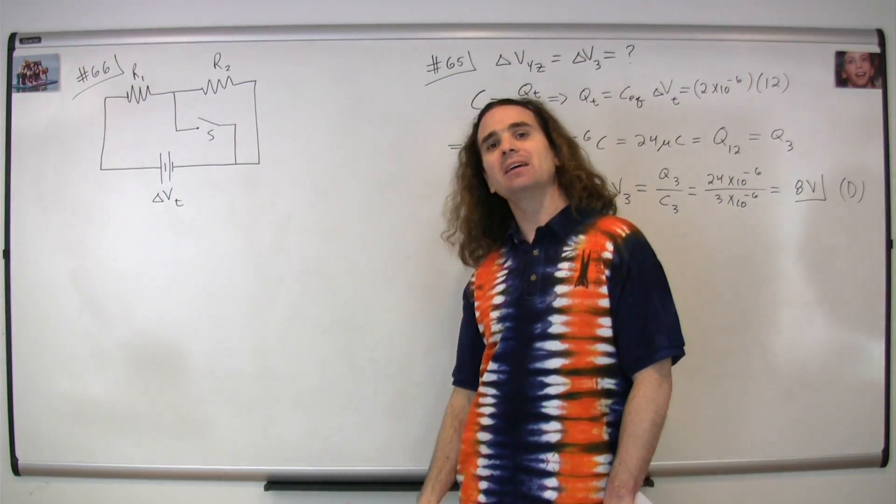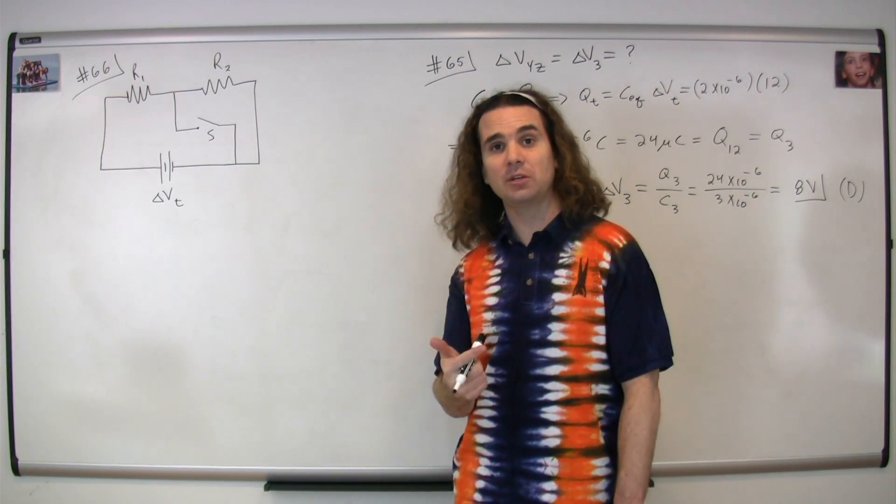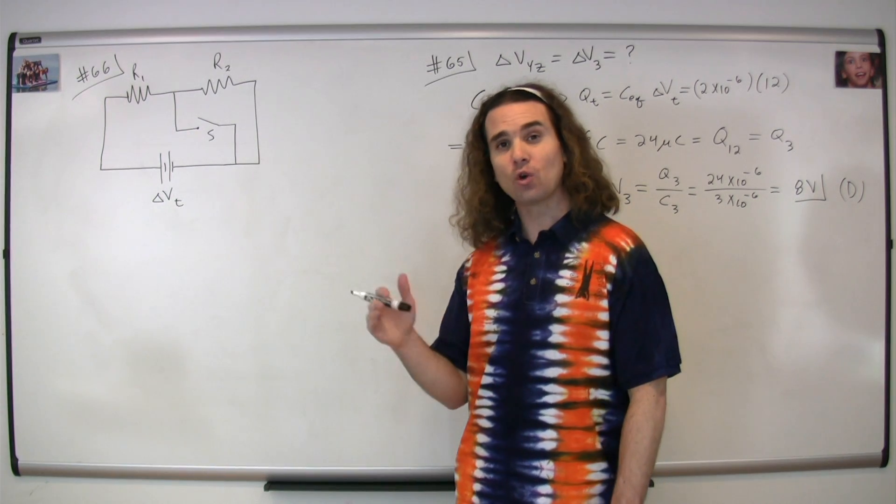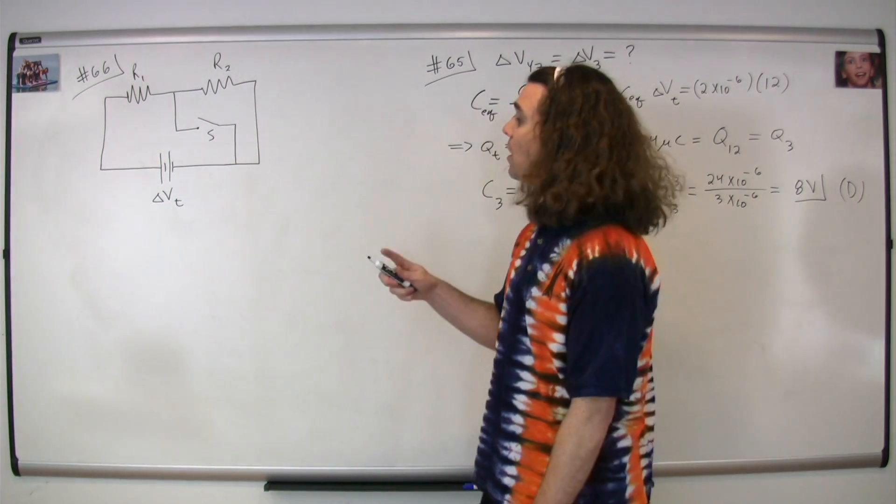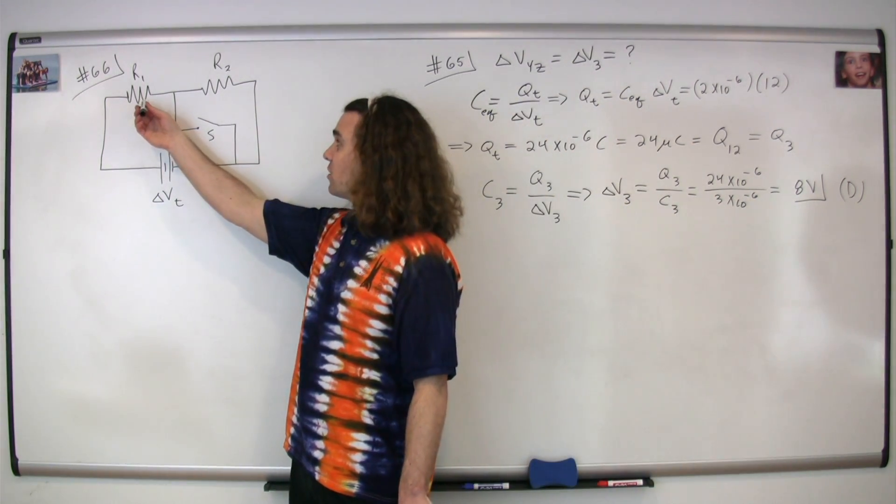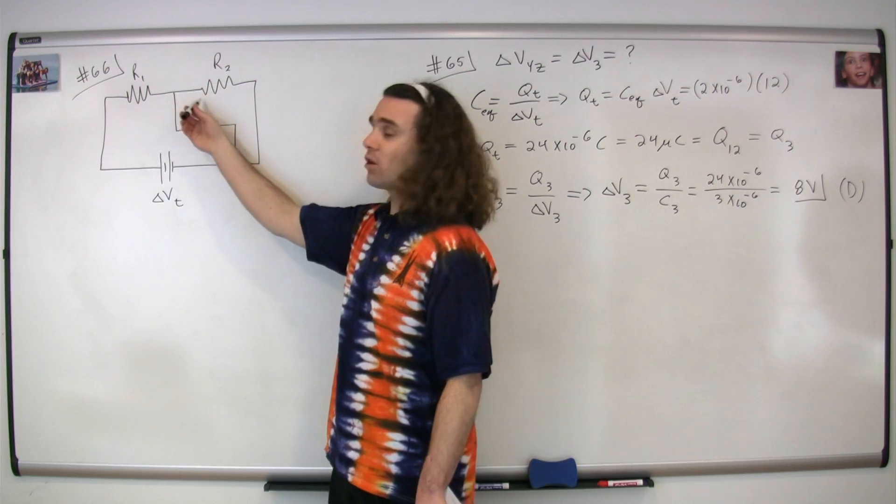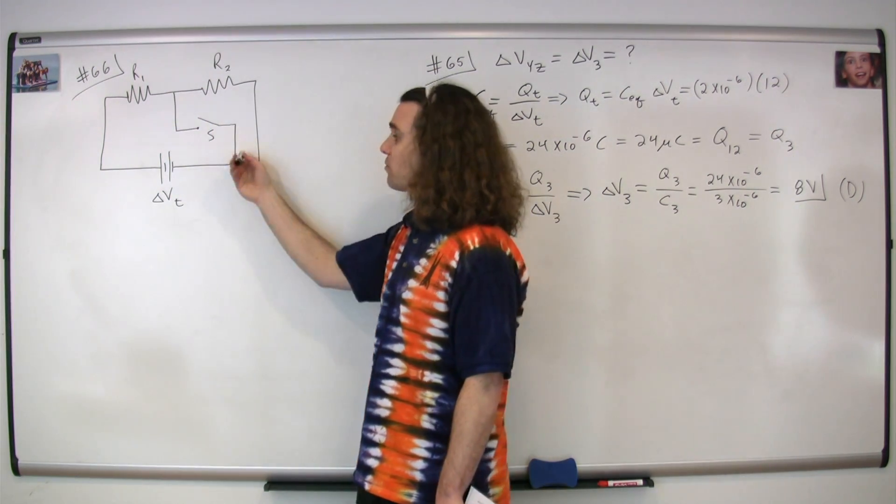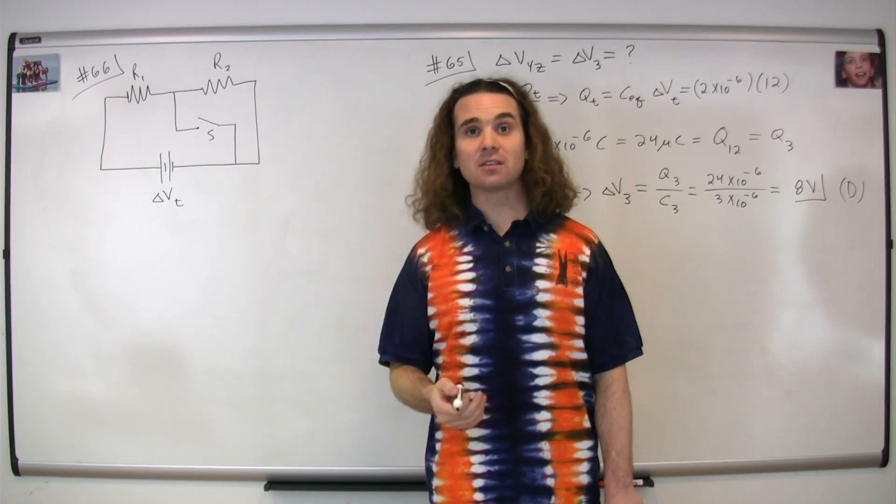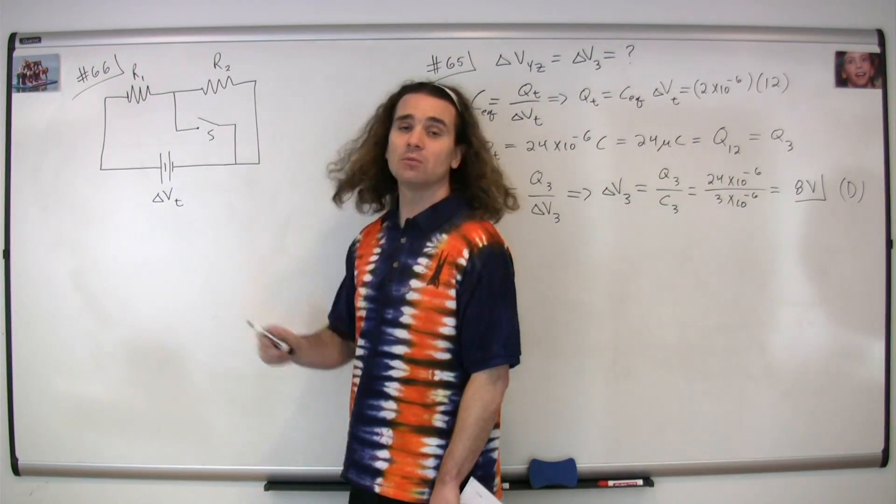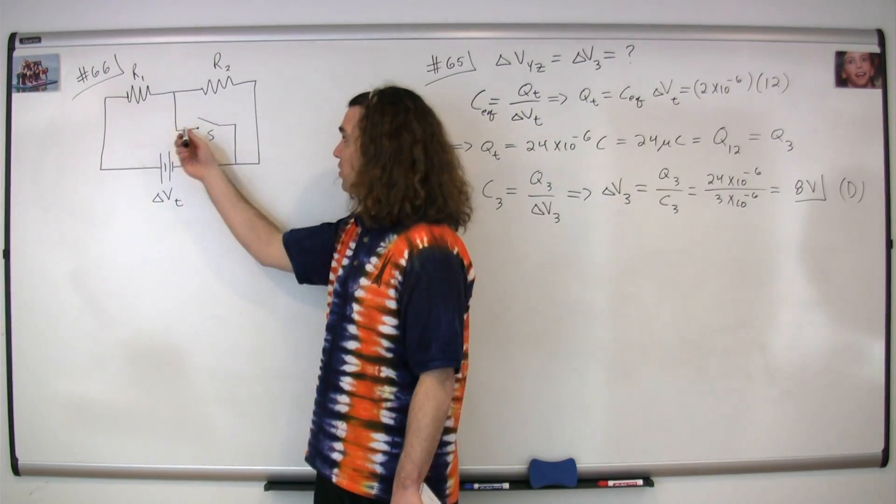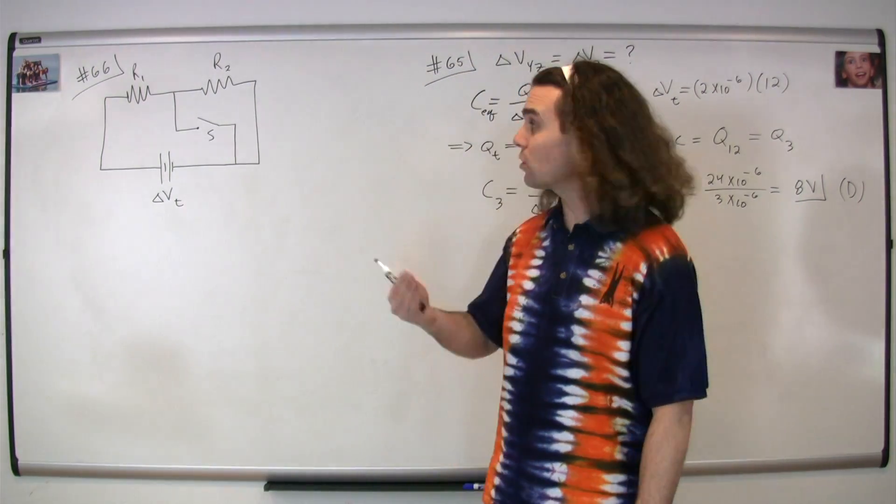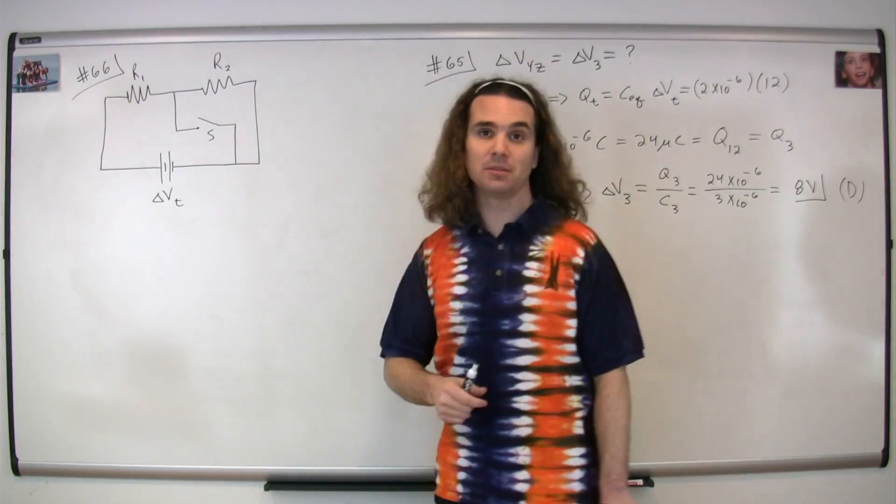The key here to remember is that all wires and switches in this class are considered to be ideal, that is, they have zero resistance. So when the switch is closed, all of these charges that are flowing are no longer going to go through light bulb two because they can go through the switch without any resistance at all. So light bulb two is going to go out because all the current is going to go through the switch. We have essentially shorted out light bulb two.